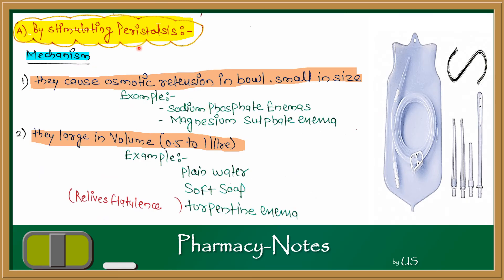Cleaning enemas work by two mechanisms. The first method causes osmotic retention in the bowel — small in volume — which results in fecal material being discharged. Examples include sodium phosphate enemas and magnesium sulfate enemas. The second method uses large-volume enemas such as plain water, soft soap, and turpentine enemas, which help remove fecal material and relieve flatulence or acidity.